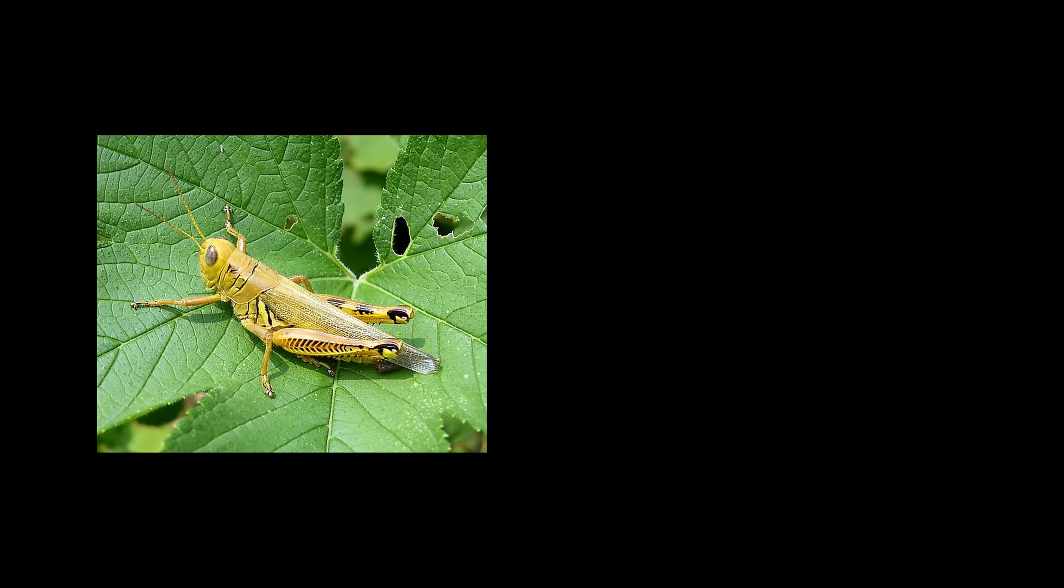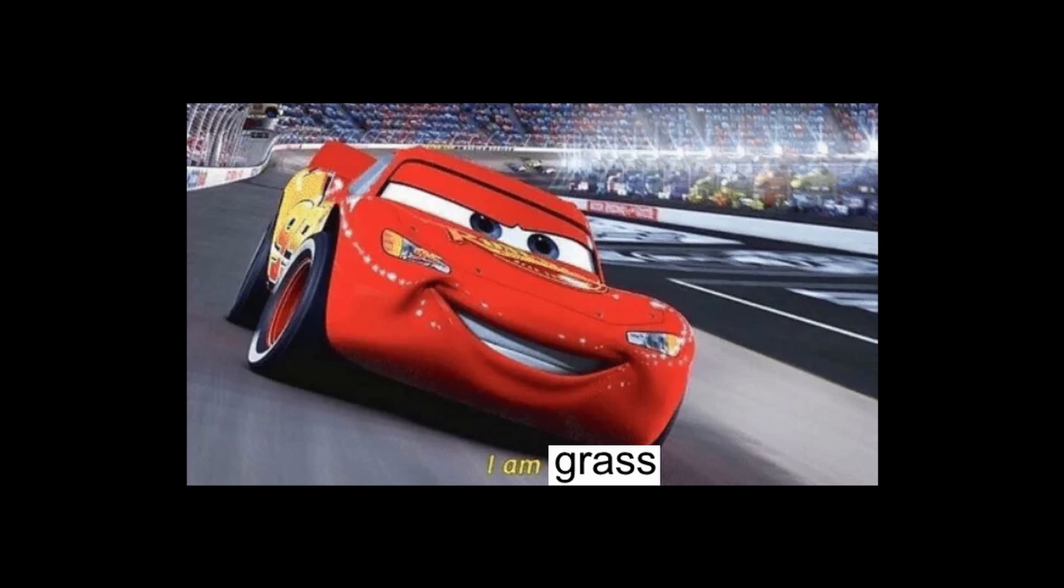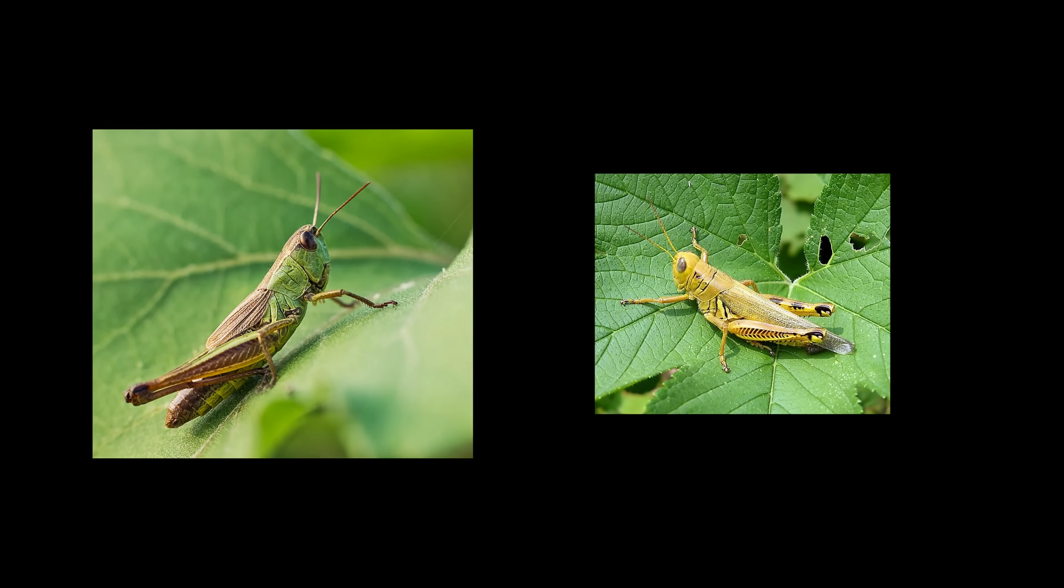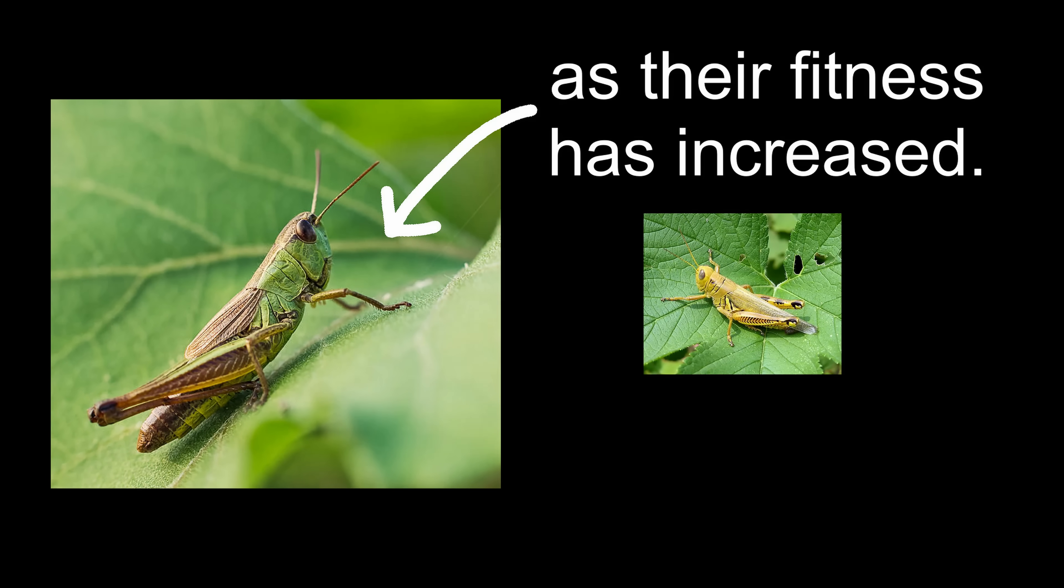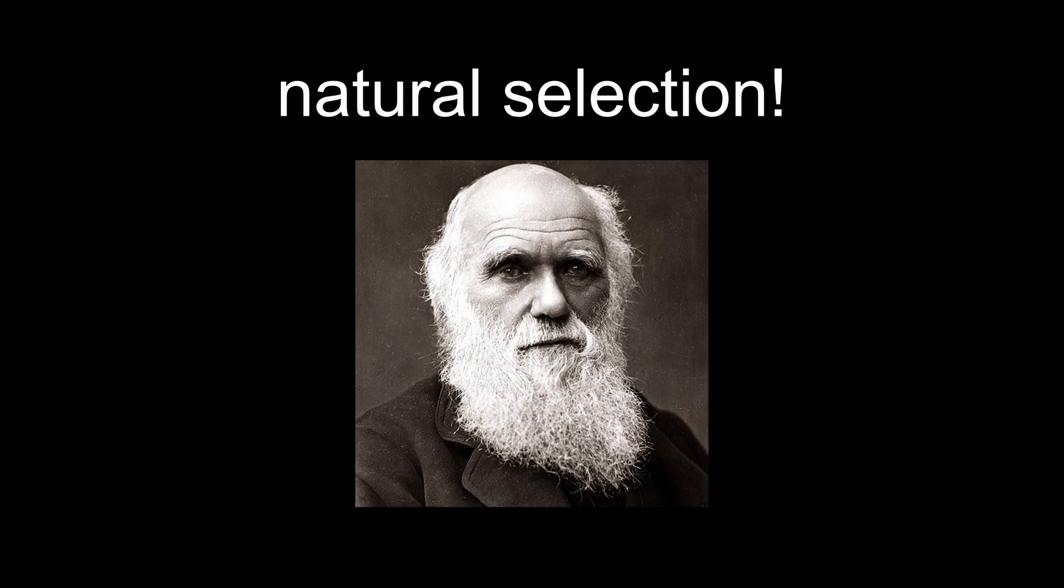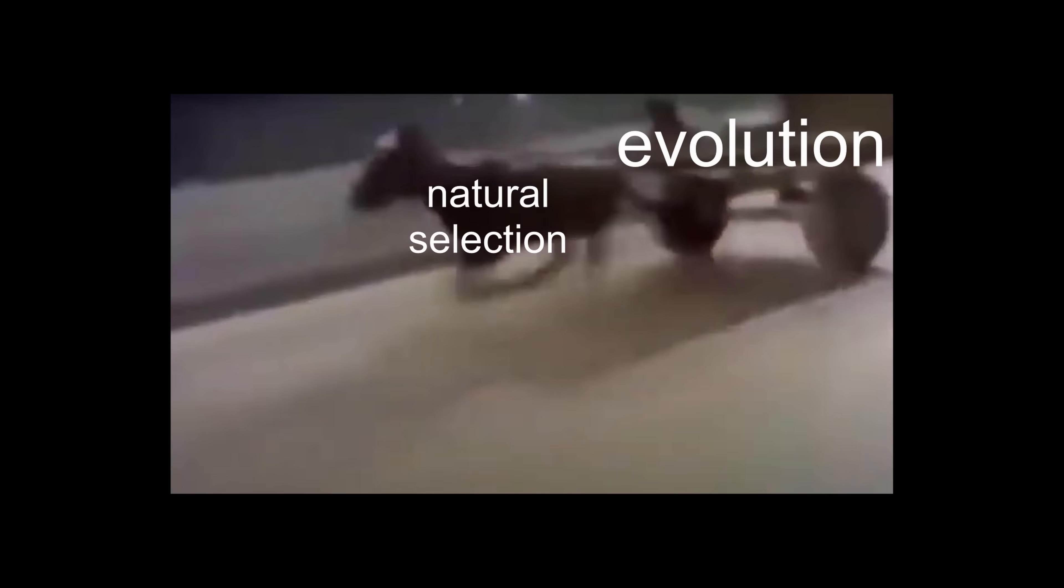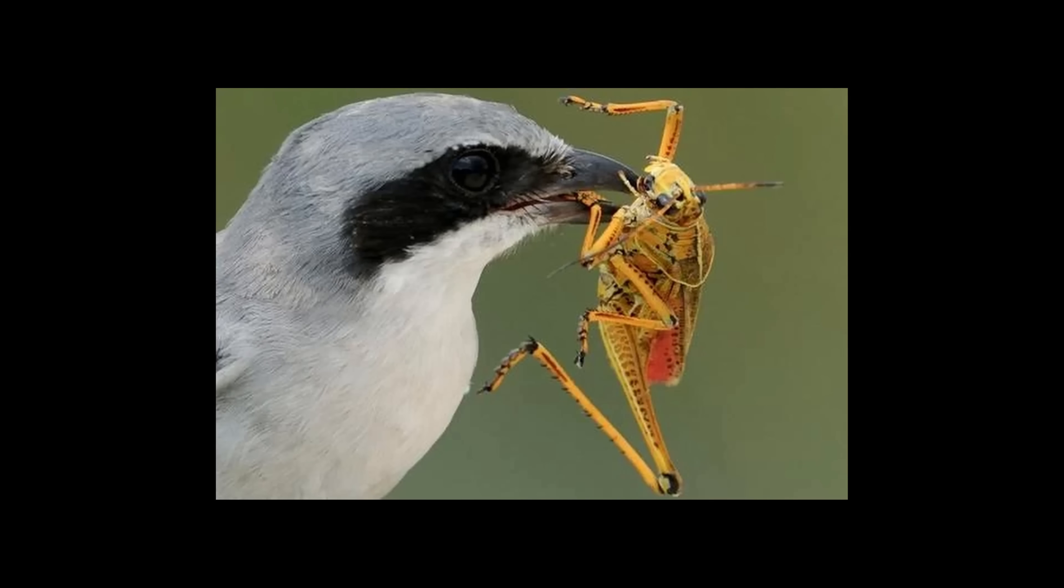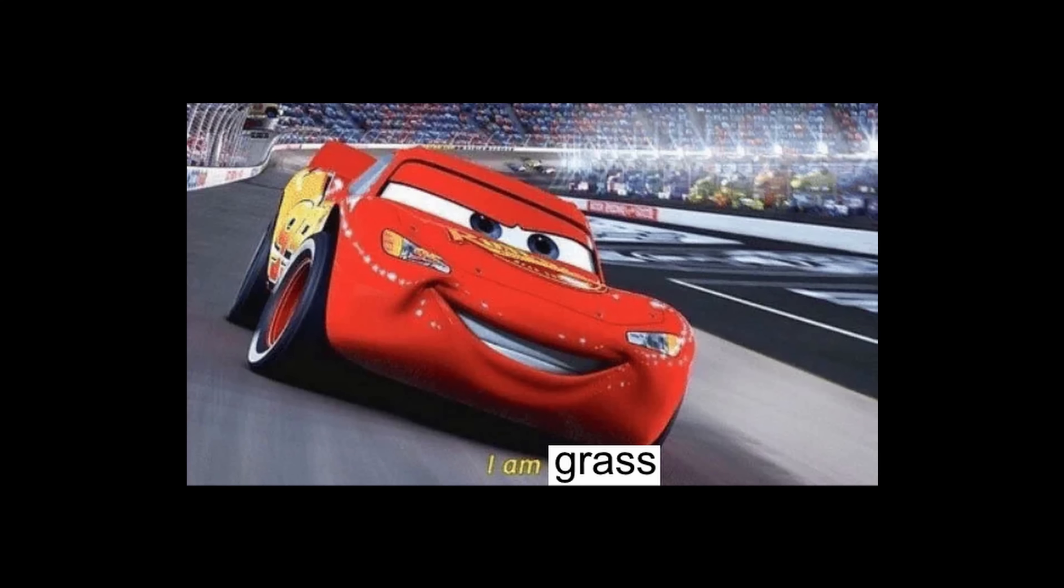Mutations might seem like a bad thing, but actually, they can also be neutral or even beneficial. For example, a species of yellow grasshoppers might mutate and become green, which makes them blend in with the grass and get eaten less. Over time, you can expect to see more and more green grasshoppers as their fitness has increased. Not that kind of fitness, fitness as in they can have more offspring because they get eaten less. This is natural selection and the driving factor behind evolution, as the poorly adapted species gets selected against and the fittest species which has adapted to the environment survives and has the most offspring, passing down the trait that made them survive.